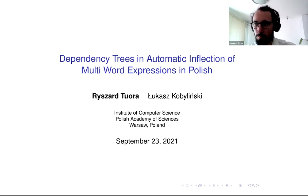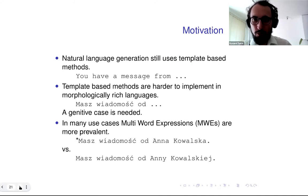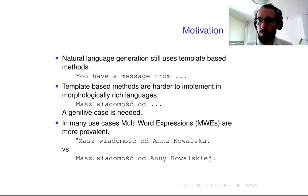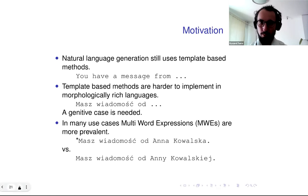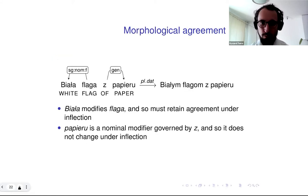Thank you. My name is Richard Tuora and we'll be talking about how one can use dependency trees to generate inflections for multi-word expressions, specifically in Polish. Our main motivation is natural language generation. Today template-based methods are still popular and these require filling slots with prepared data, but for morphologically rich languages this is more difficult as we need to inflect words before putting them into the slot in order for the sentence to be grammatically correct. Moreover, in many use cases we need to input multi-word expressions as opposed to individual words, which further complicates things.